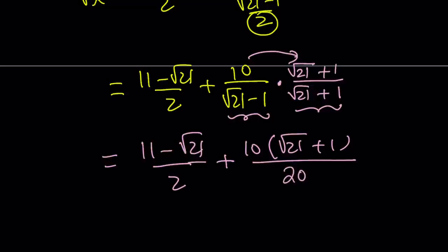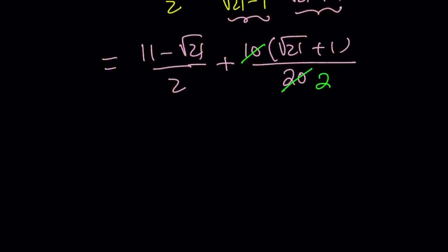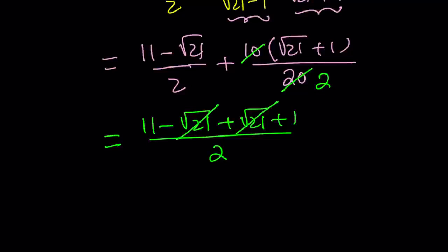Now, we can definitely simplify this. Let's go ahead and simplify. And we get a 2 here, which is nice because we don't have to make a common denominator. We already have one. And the numerator becomes 11 minus the square root of 21 plus the square root of 21 plus 1 all over 2. Square root of 21 cancels out. And we end up with 11 plus 1 divided by 2, which is equal to 6. So my expression, which was given as x plus 5 over the square root of x, is 6.